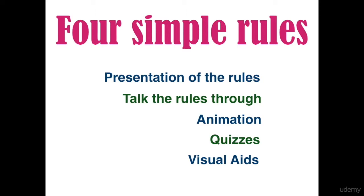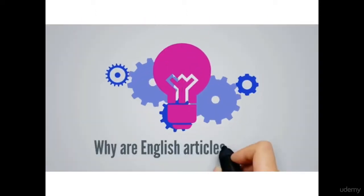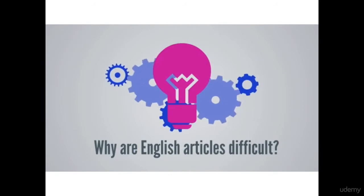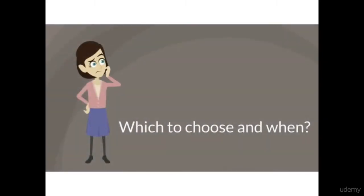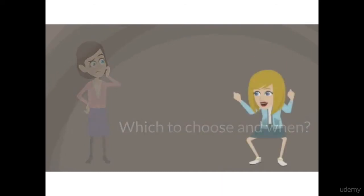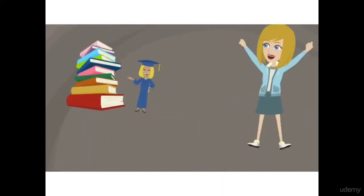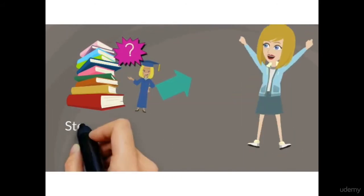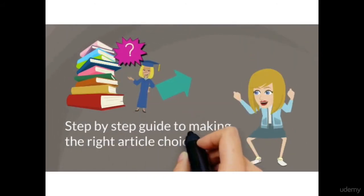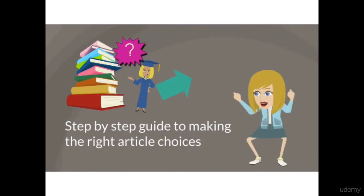In order to make this point clear, please watch a short animation. Why are English articles so difficult? As you know, there are four types of articles: a, an, the, and no article. But it's difficult to know which one to choose when. Using explanations, animations, quizzes, and visual charts will lead you in an easy-to-follow, step-by-step guide to making the right article choices.